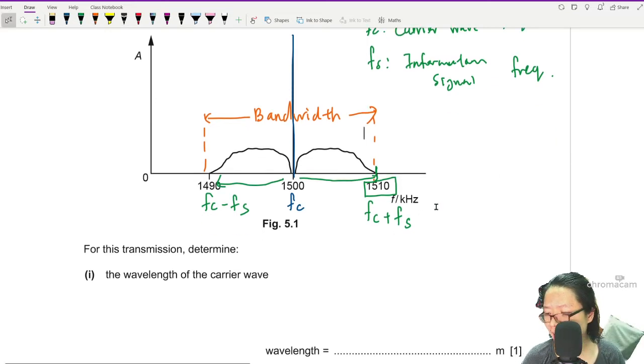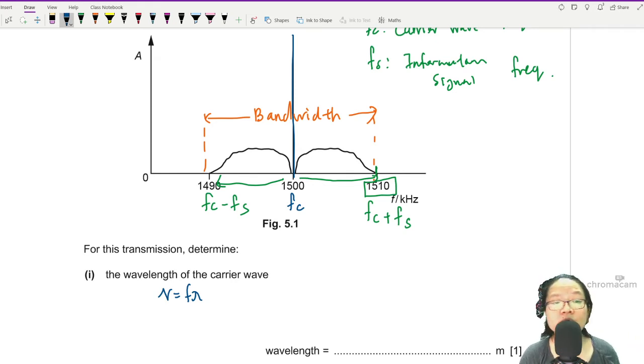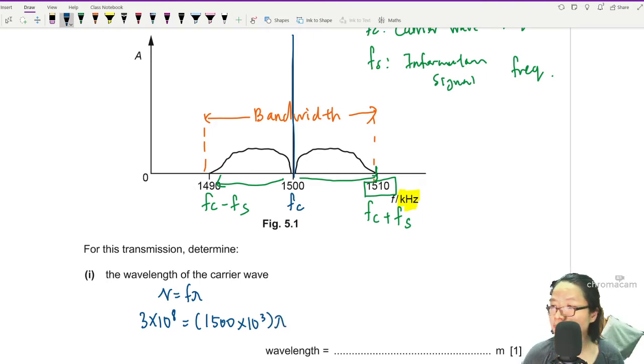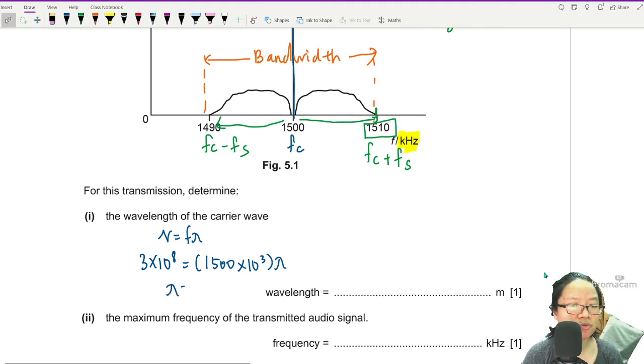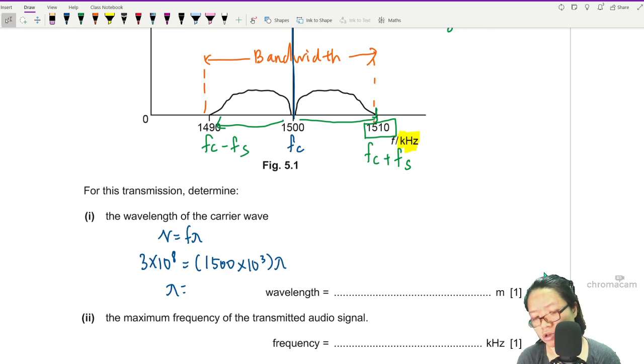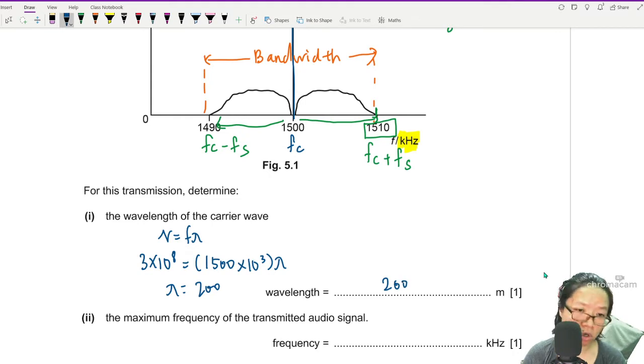For this transmission, determine the wavelength of the carrier wave. So we can use our beautiful V equal F lambda all the time, any time, because radio wave is electromagnetic wave. 3 times 10 to the power of 8. We have the frequency of the carrier wave, 1500. Don't forget there's a kilo hiding here. Power 3. Lambda. And if you press your calculator, your wavelength, I'll get 200 meter. This looks legit, because wavelength for radio wave is very long.